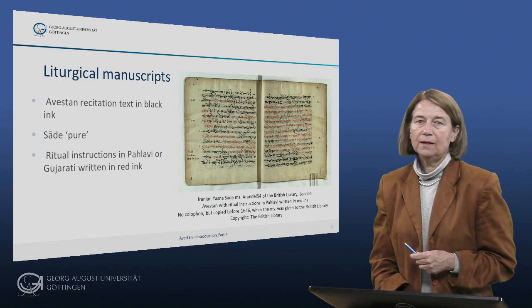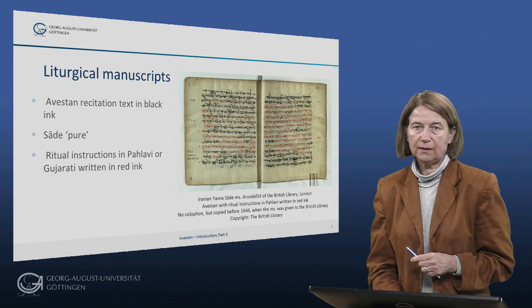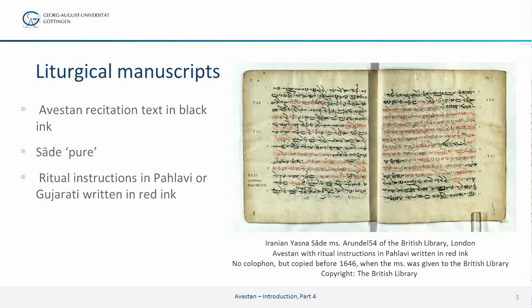The liturgical manuscripts have the Avestan text only and are therefore called Sade, or 'pure,' which is Pahlavi Persian. They provide the text to be recited in the rituals. The instructions in Pahlavi or Gujarati state which priest has to recite a particular text and describe the actions to be performed during the recitation. The ritual instructions are often written in red ink which makes them stand out. Here in this example you have the ritual instructions written in red ink, while the Avestan recitation text is written in black ink, and the ritual instructions are in Pahlavi.